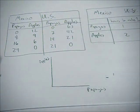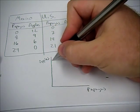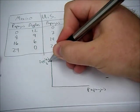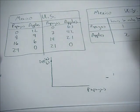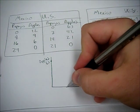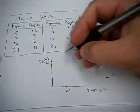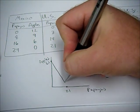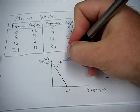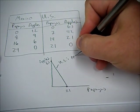So the maximum amount of apples the U.S. can produce is 63. So we'll draw that intercept. The maximum amount of papayas is 21. We connect those lines and this is the U.S.'s PPF.